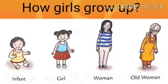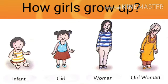Now let us discuss about how girls grow up. Just like boys, when a girl is born, she is an infant. After that, she becomes a girl — a young female human. After that, she becomes a woman, an adult female human being. After being a woman, she becomes an old woman. In this stage, she has reached the last stage of her life.